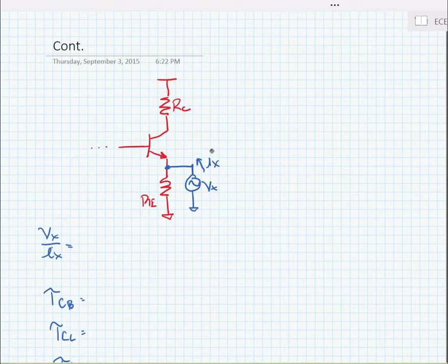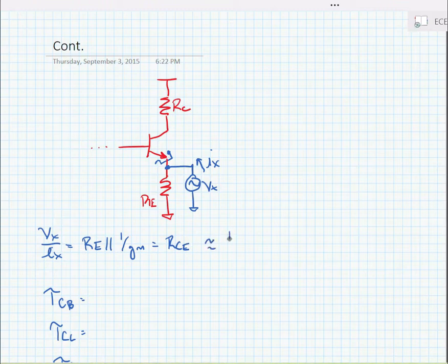So in this case, VX over IX is equal to RE in parallel with the resistance seen looking into the source, and we know that that's one over GM. This is equal to RCE. Now in many cases, one over GM is much smaller than RE, so we might be able to make the approximation that RCE is equal to one over GM. Of course, we have to be careful and check our assumption.